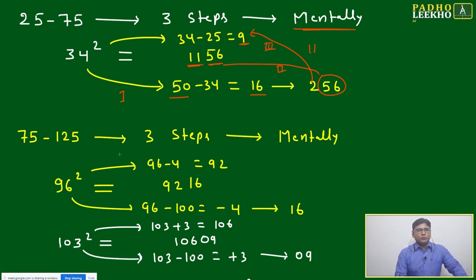If numbers lie between 75 to 125, again three steps mentally. Just suppose the number is 96 square. Then here the only thing you have to be careful about in step 1: you must do number minus 100. In the 25 to 75 case, either you're doing number minus 50 or 50 minus number—it's not going to affect your answer. But here it is going to affect your answer.